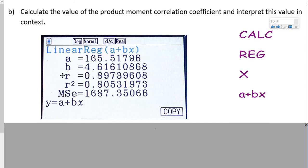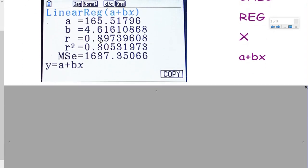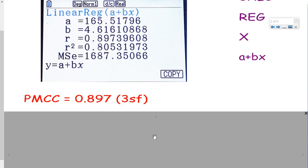Here are my values for the PMCC. This is the value of R. Remember, the R goes from negative one to positive one, with positive one being perfect positive correlation. I've got 0.897 as my PMCC or my R value.